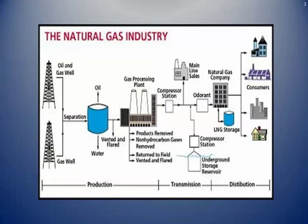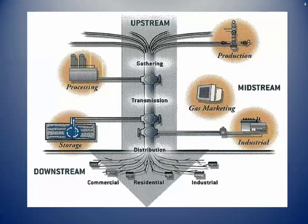Here's a schematic showing the overall industry and the different paths that the natural gas goes through. You've got the gas well, separation between oil, water, and natural gas, going through gas processing plants, with opportunities for storage, and ultimately reaching the end users. Here's another setup of how we separate upstream, midstream, and downstream within the natural gas industry.